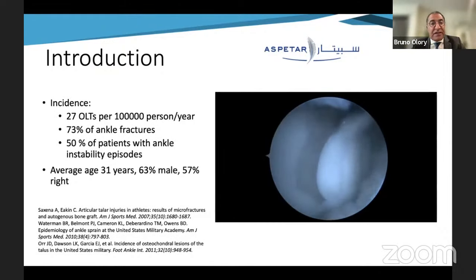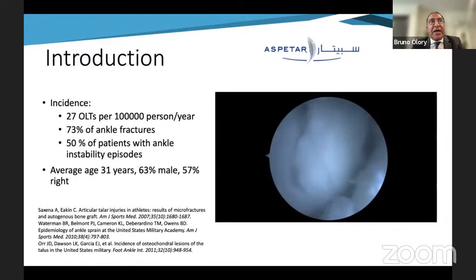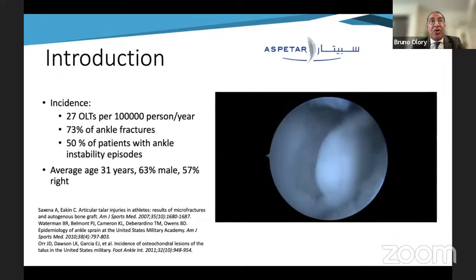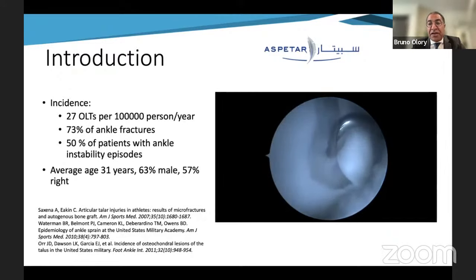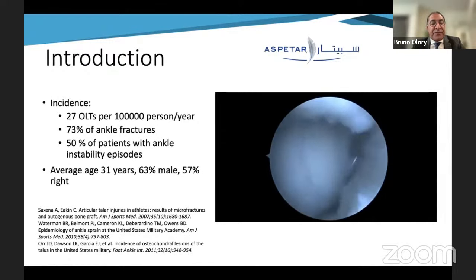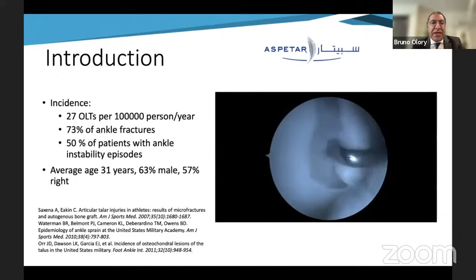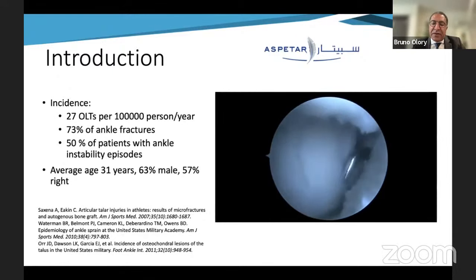The incidence of this pathology is 27 cases per 100,000 persons per year. We can find these lesions in more than 70% of ankle fractures, and more than 50% of patients with ankle instability will also present an osteochondral lesion of the talus. On average, the patient is 31 years old, male in 63% of cases, and in more than 50% of cases it is the right ankle involved.